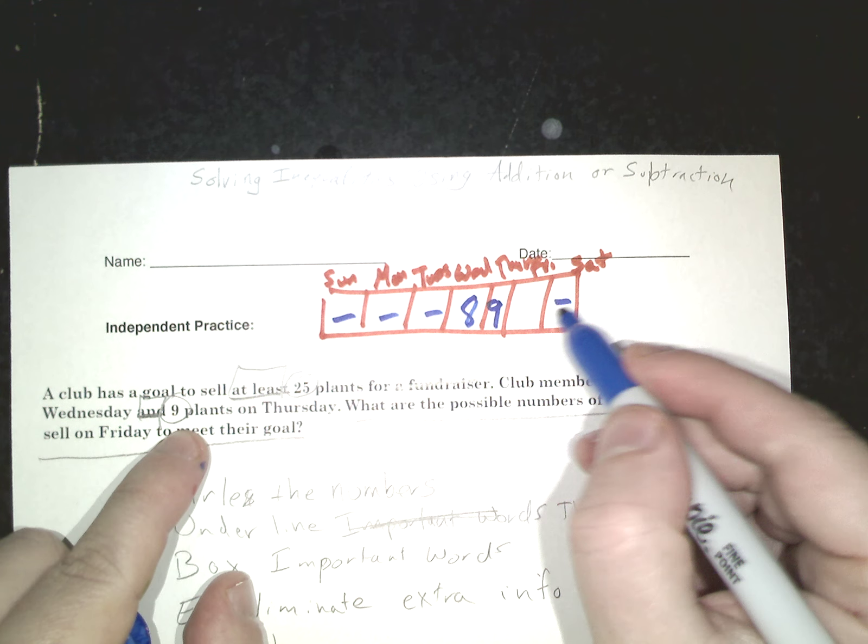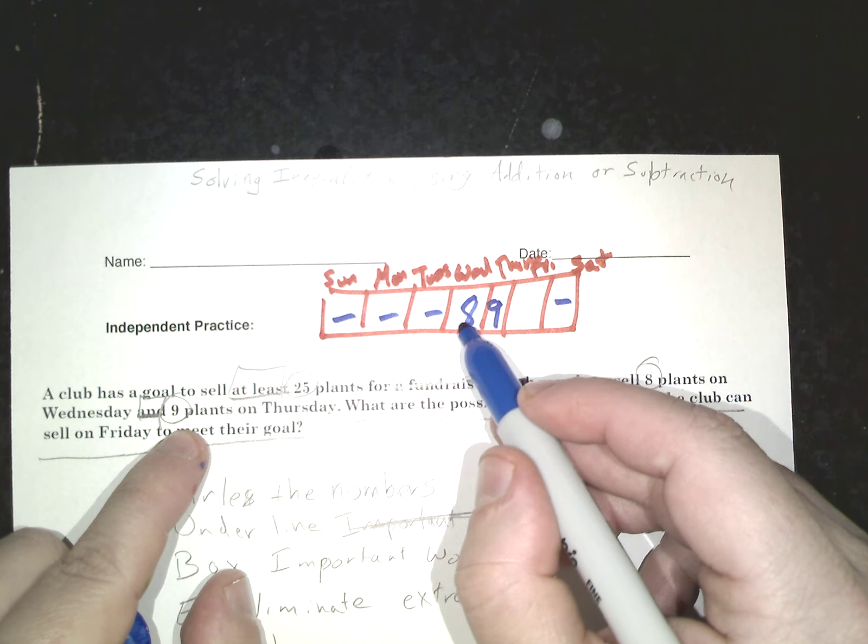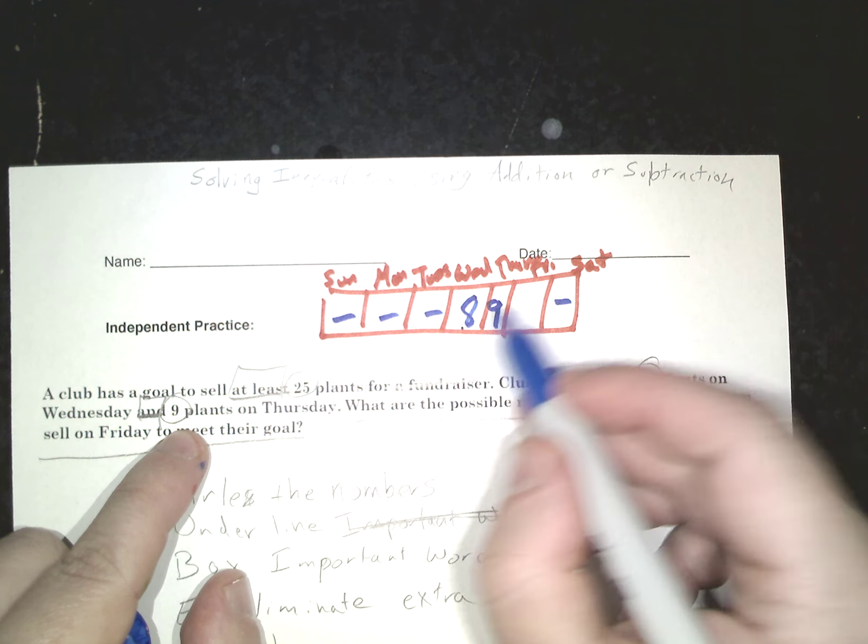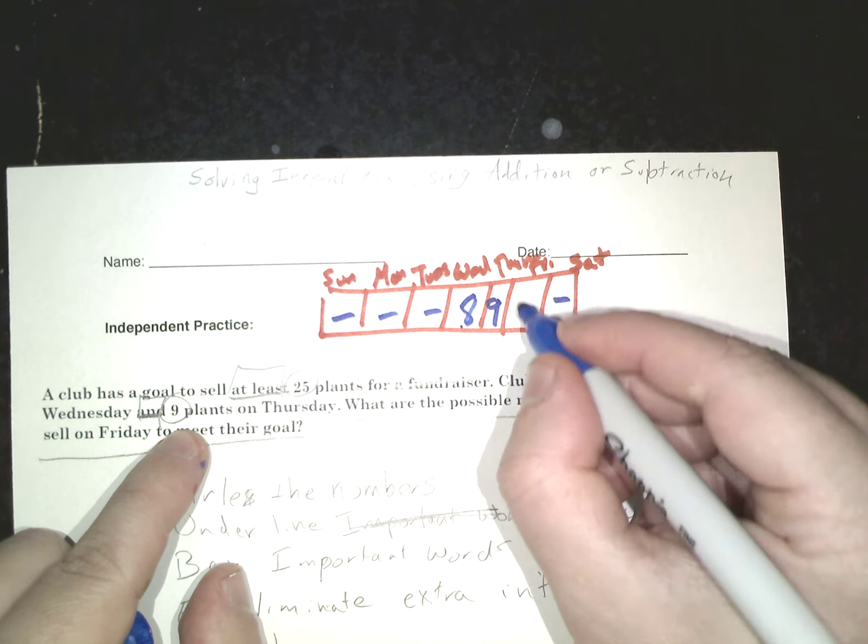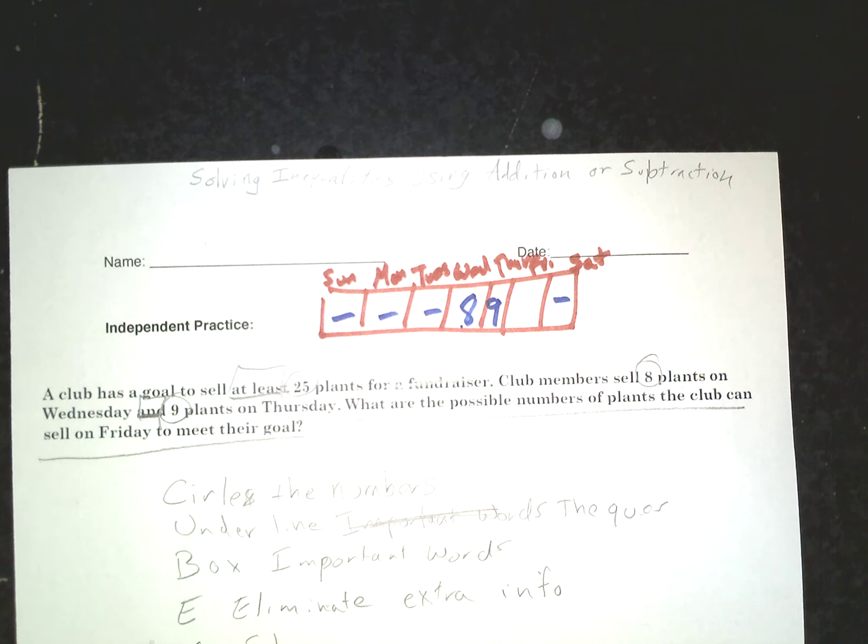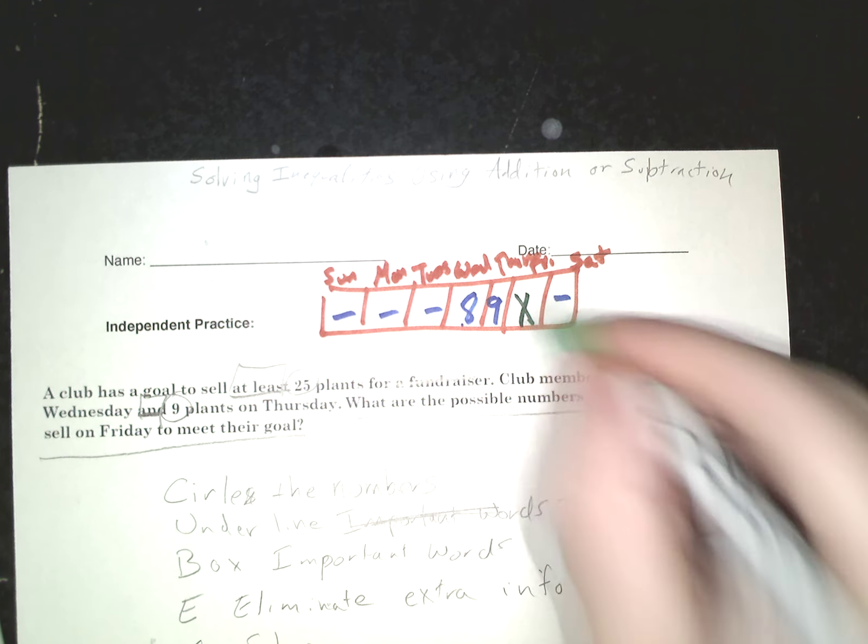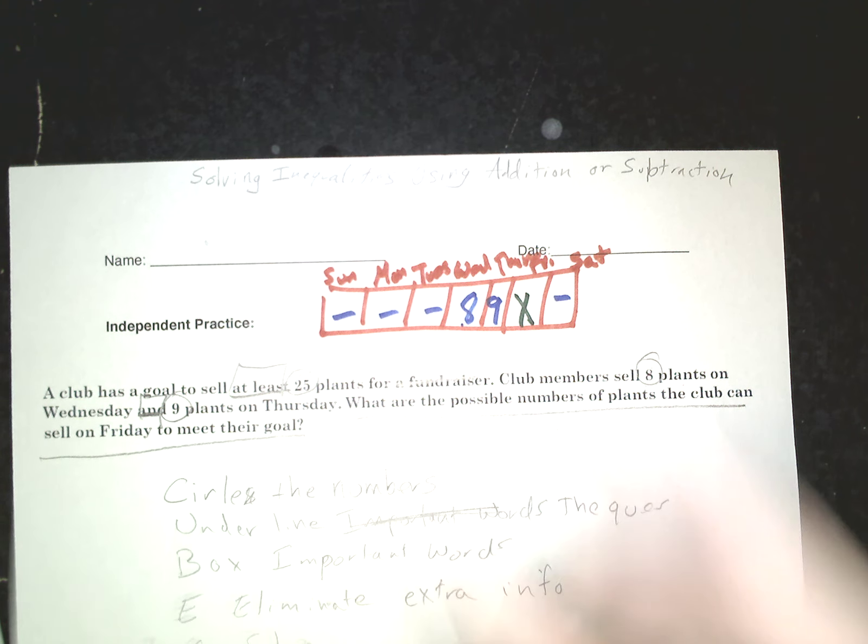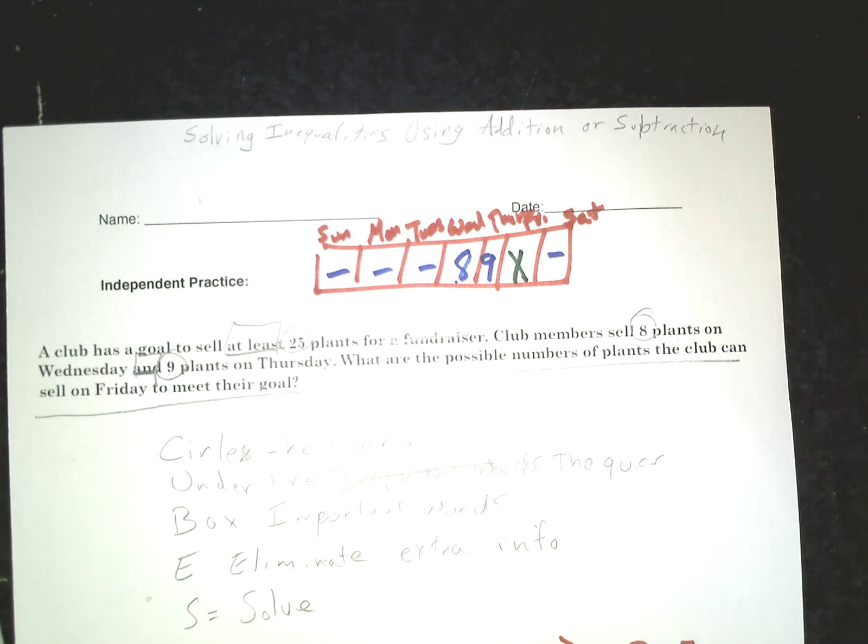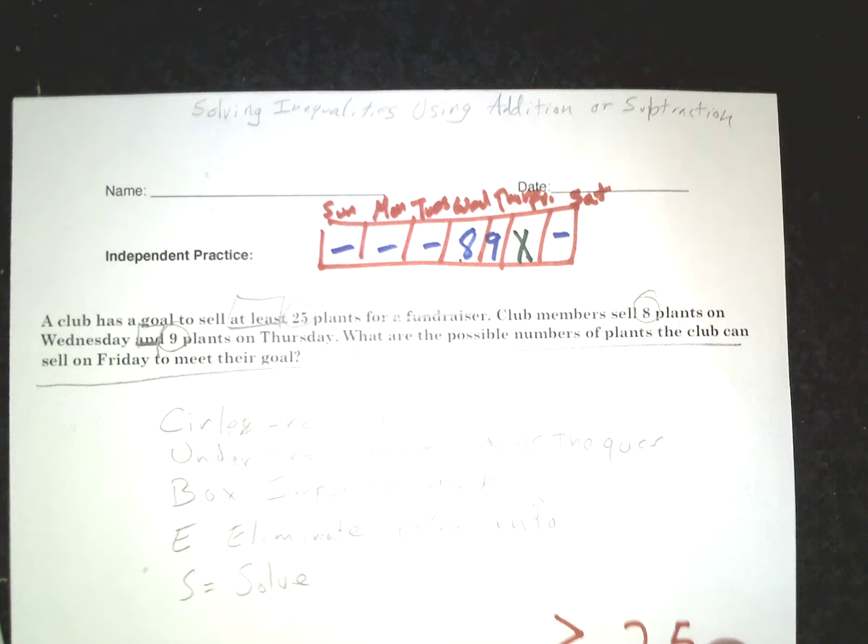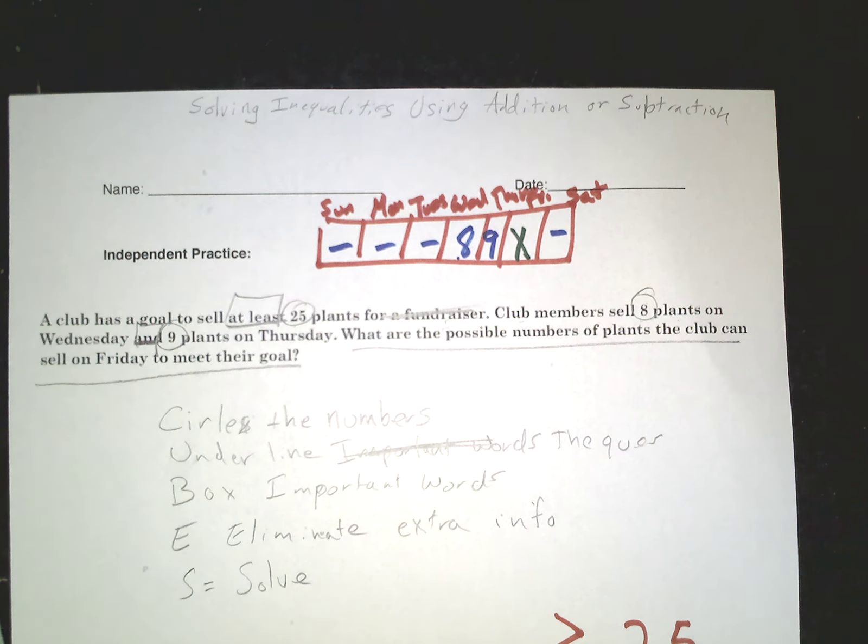For whatever reason they have to make their goal by the end of the day Friday. So the total of these three is going to be 8 plus 9 plus whatever this is. I'm going to call this, since I don't know it, whenever I don't know it I go to my favorite letter: x.